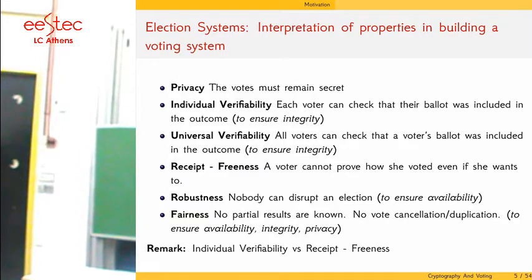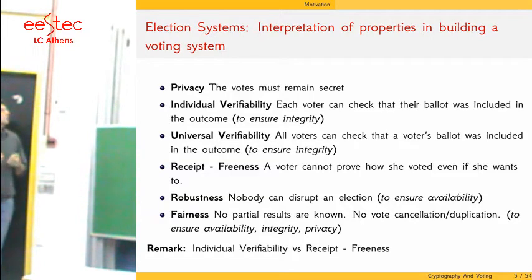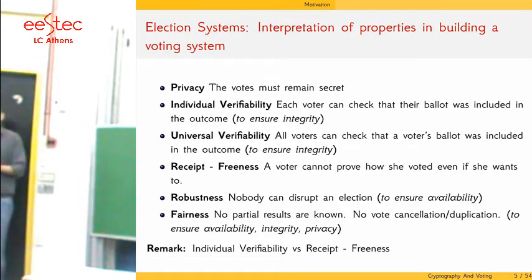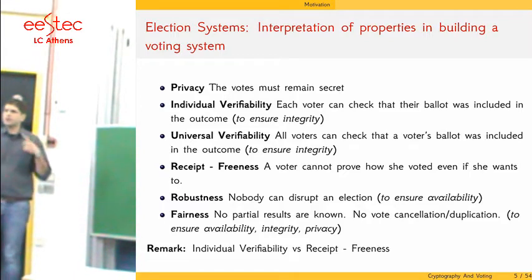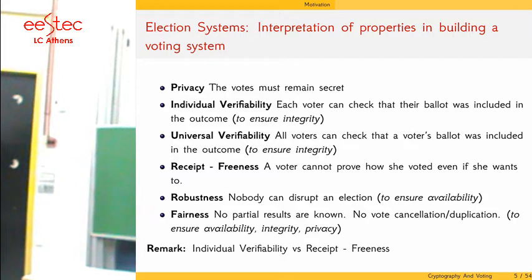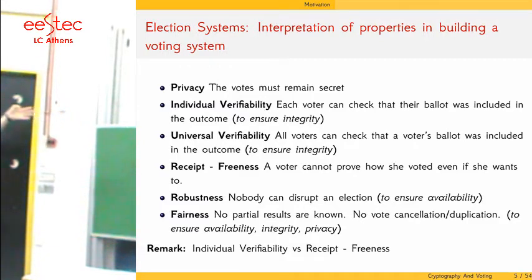Individual verifiability is very important in order to convince the loser — the loser should be convinced that he or she lost fairly. We require receipt freeness: the system cannot provide any sort of receipt to the voter because such a receipt might be used to sell the vote or to coerce someone to vote in a particular way. We require robustness so nobody can disrupt the election, and we require fairness, meaning no intermediate results should be known, because if results are known this gives incentive to change or cancel votes.